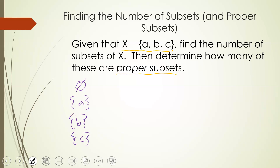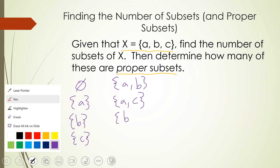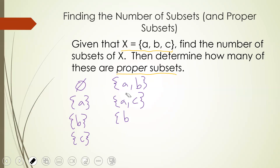We then move on to all subsets of size 2. Starting with subsets that contain element a: we have the set {a, b} and the set {a, c}. There are no more containing a since there are no other elements to pair it with. Moving on to two-element sets containing b: we already have {a, b}, and the new one is {b, c}.